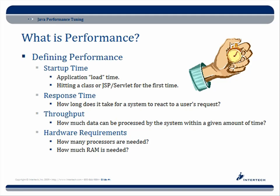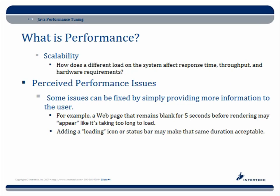Hardware requirements — how many processors and how much RAM does your application need — are also aspects of performance to define and measure. Scalability is key: how does different load on the system affect response time, throughput, and hardware requirements? Some of these are tied to perceived performance — for example, you might not be able to make an app start faster, but you can add a loading icon, status bar, or splash screen to make users more patient. Never underestimate perceived performance issues.